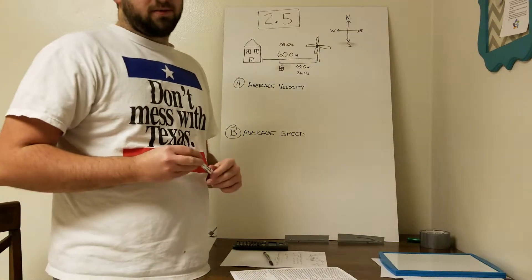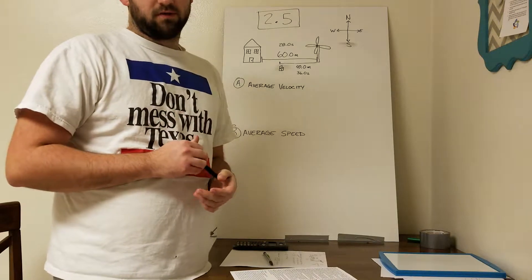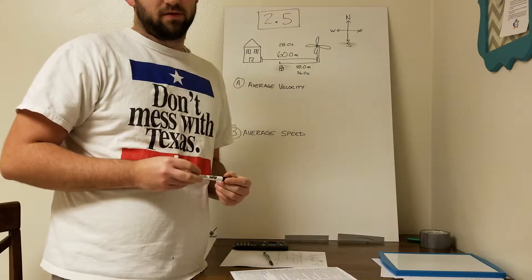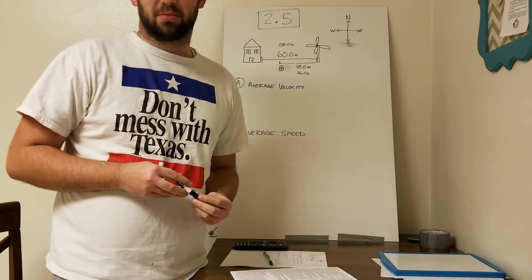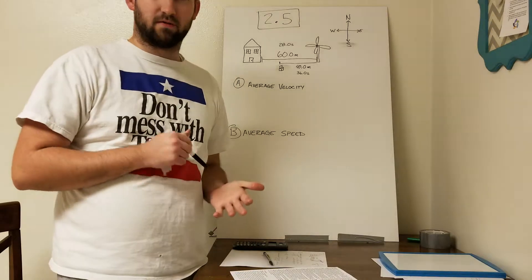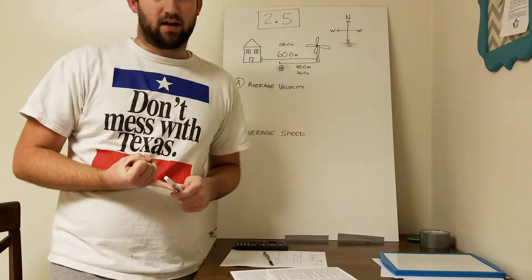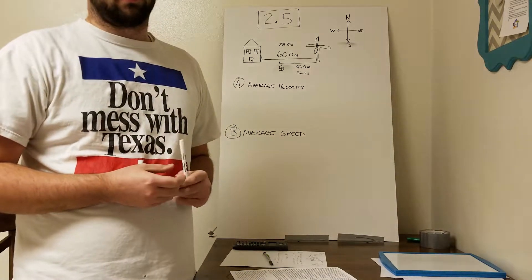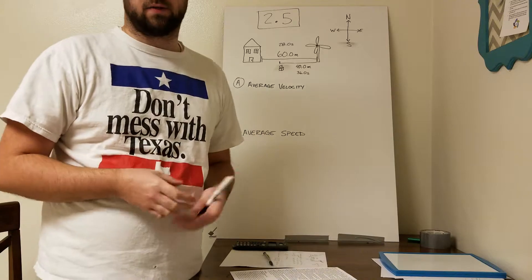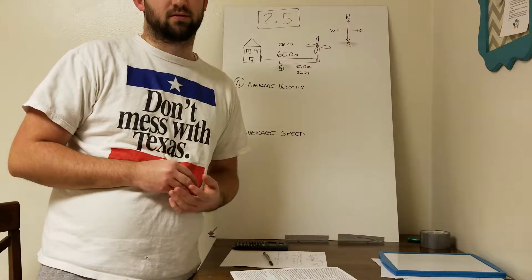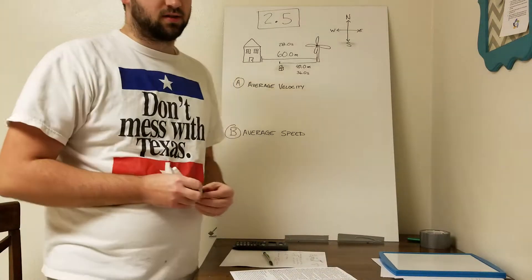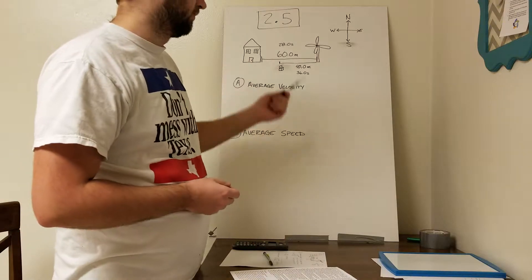Hi everybody, today I'm going to be showing you a video solution for how to do problem 2.5 from the in-class bingo problems. This one is pretty straightforward—it's talking about finding average velocity and average speed based on the information that's given to us. I've already put the information up here on the whiteboard.